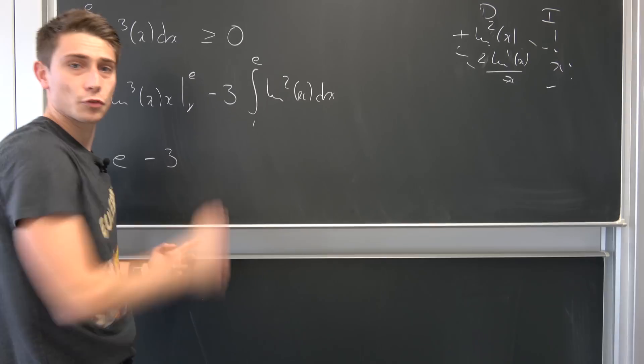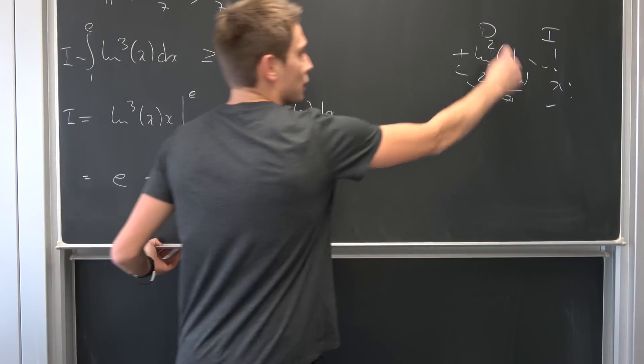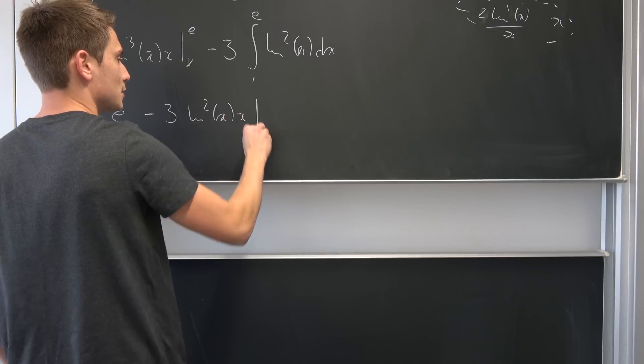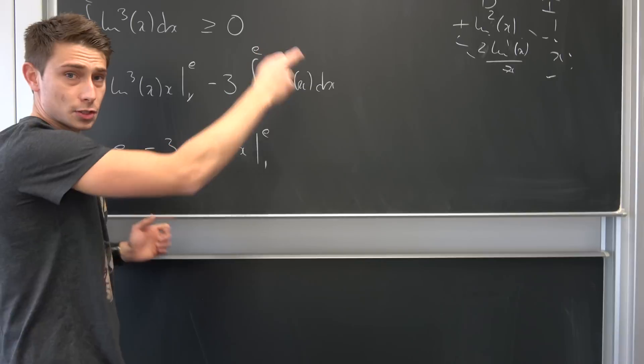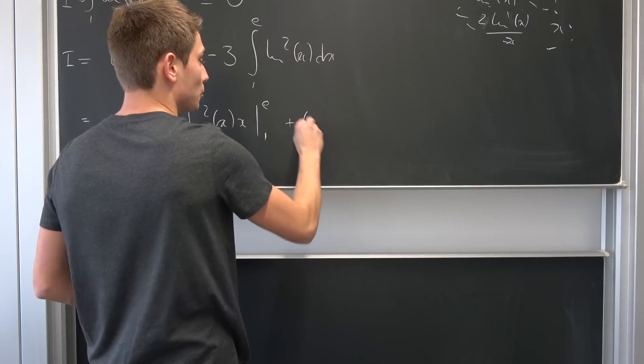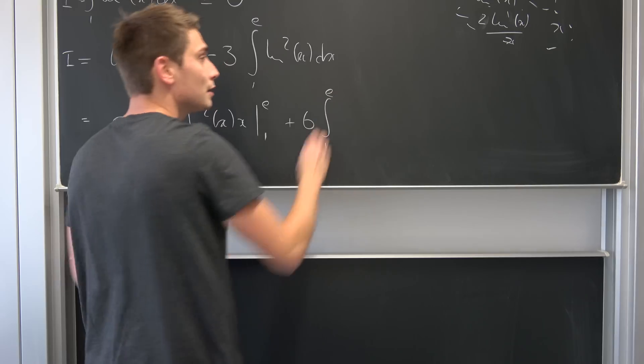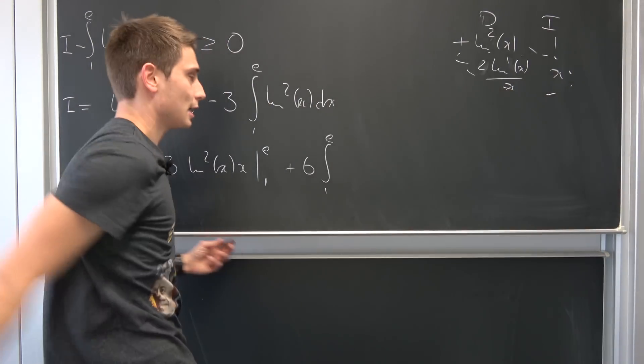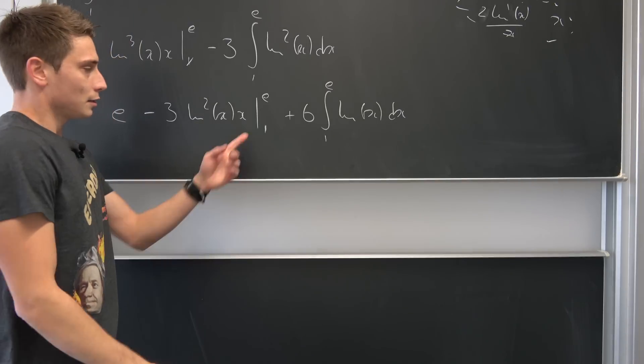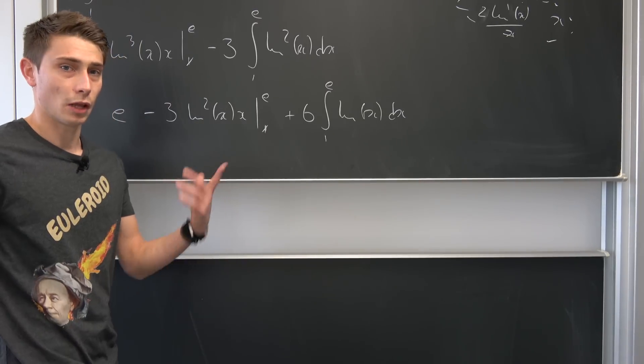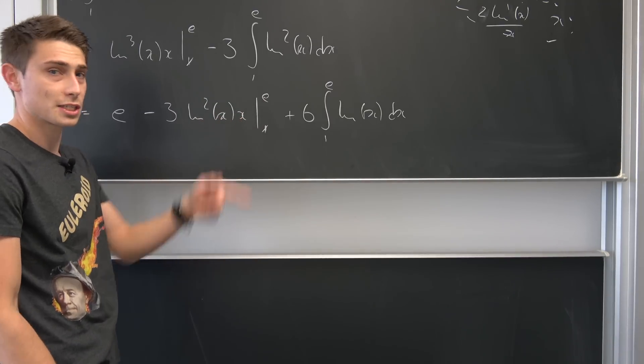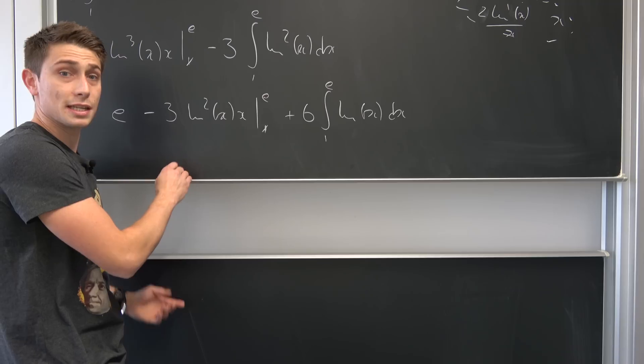So at first we have negative 3 times the natural log squared of x times x from 1 to e. Negative and negative is going to become positive. 3 times 2 is 6. Going to bring it to the front of the integral. So positive 6 integral from 1 to e. 1 over x and x is going to cancel out to the natural log of x in the end dx. Same argumentation. Lower bound is going to vanish. Natural log of e is 1. So this is 3 times e. e minus 3 times e is negative 2 times e.